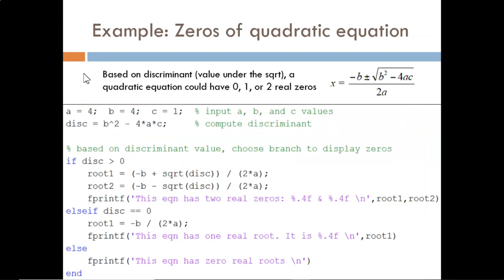Here's one example of an application of an if-else branching statement. As you know from algebra, the zeros of a quadratic equation can be found using this quadratic formula. The number of real zeros can be determined by the value of b squared minus 4ac, also called the discriminant. If the discriminant is positive, there are two real zeros. Otherwise, if the discriminant is zero, there is one real zero. Otherwise, there are no real zeros.